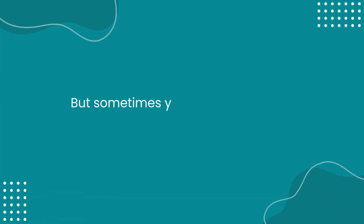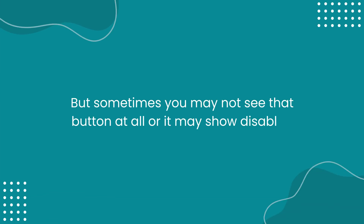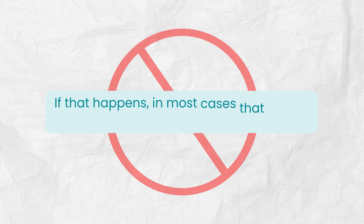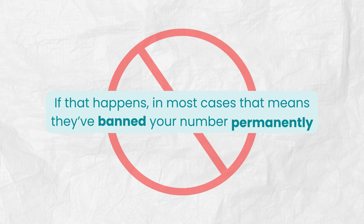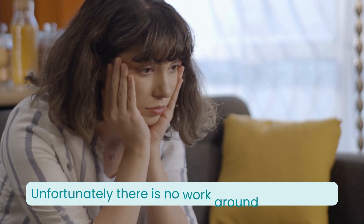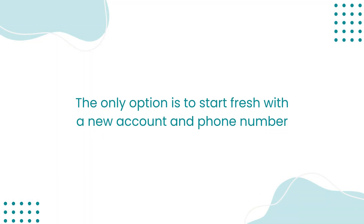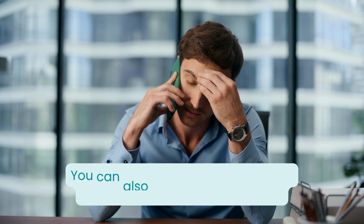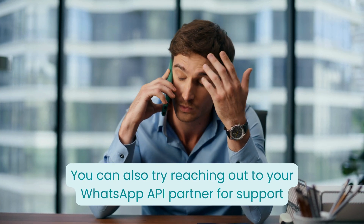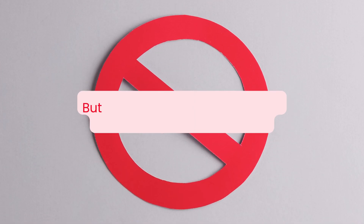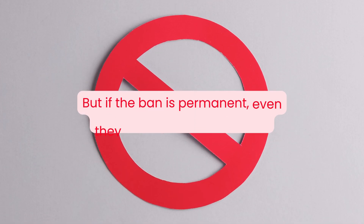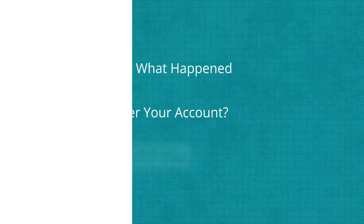But sometimes you may not see that button at all, or it may show as disabled. If that happens, in most cases it means they've banned your number permanently. Unfortunately, there is no workaround in that case, and the only option is to start fresh with a new account and phone number. You can also try reaching out to your WhatsApp API partner for support, but if the ban is permanent, even they may not be able to help.